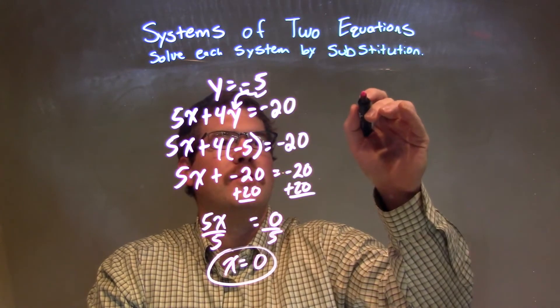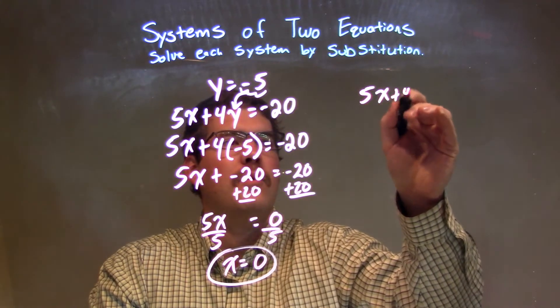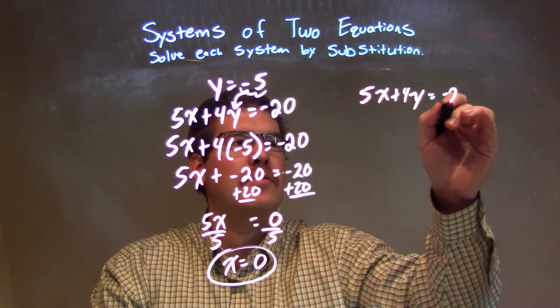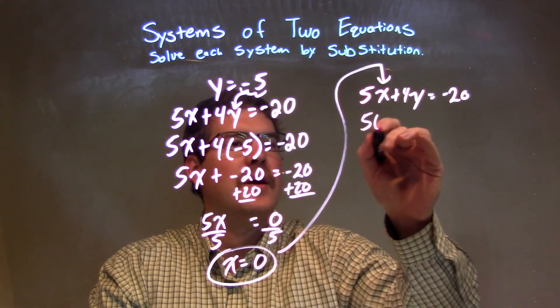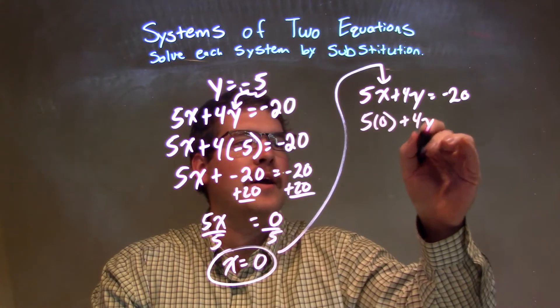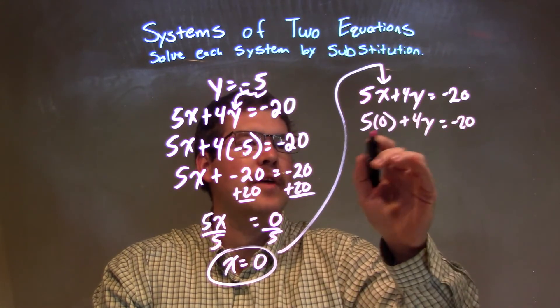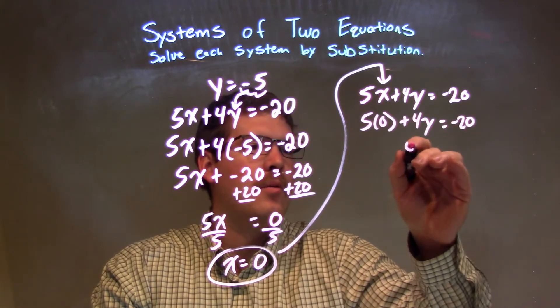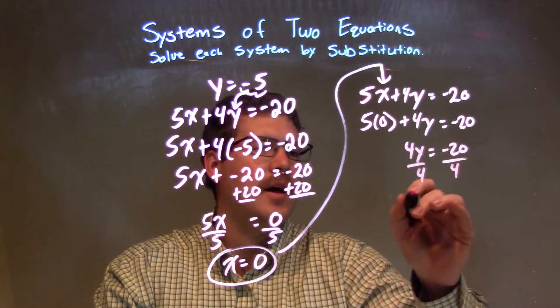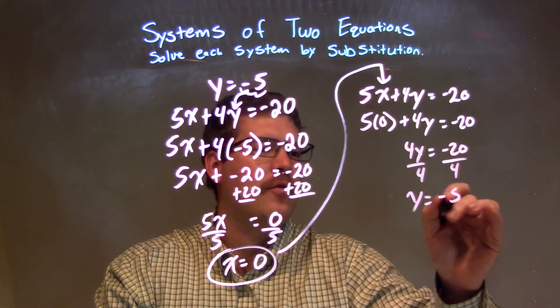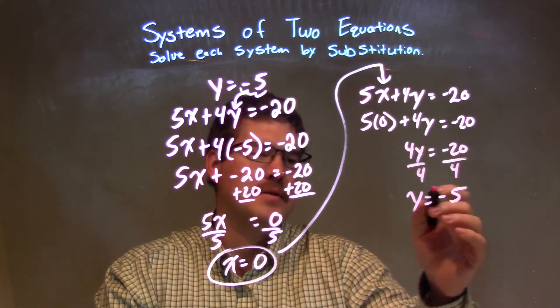Okay, so, my second equation, 5x plus 4y equals negative 20. Let's plug that 0 in for x. 5 times 0 plus 4y equals negative 20. 5 times 0 is 0. So, we have 4y equals negative 20. Divide both sides by 4. And y equals negative 5. Negative 20 divided by 4 is negative 5.